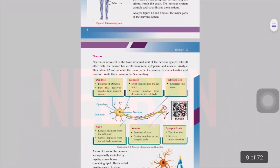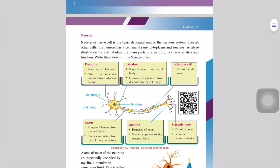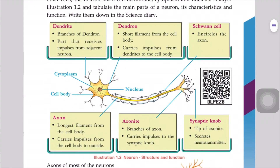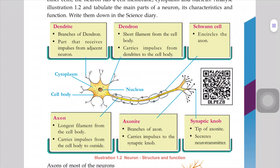In this class, we will discuss the structure of the neuron. The structural and functional unit of the nervous system is called a neuron. The structure of the neuron includes the cell body.